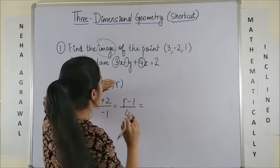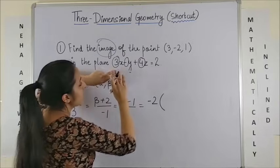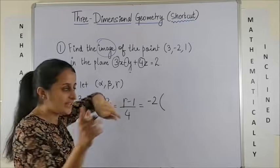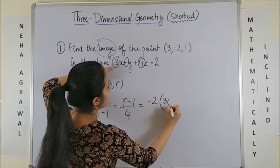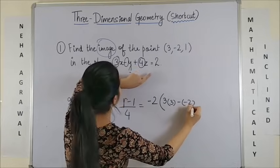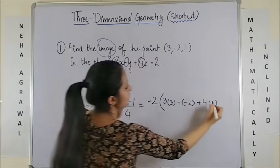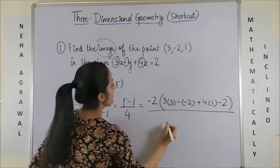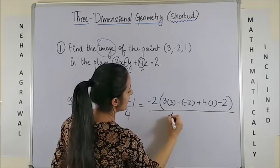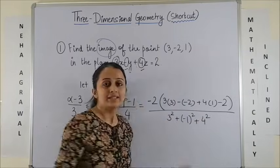What is critical is what I write on the right side — again very simple. All you need to do is minus 2 times: in the plane, wherever you find x, y, and z, you simply substitute these points. That means this will be 3 times 3, minus (minus 2), plus 4 times 1, minus 2 brought to this side, all over the square of these coefficients: 3 squared plus (minus 1) squared plus 4 squared.